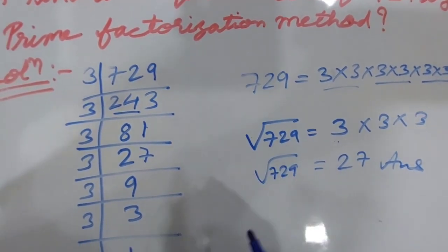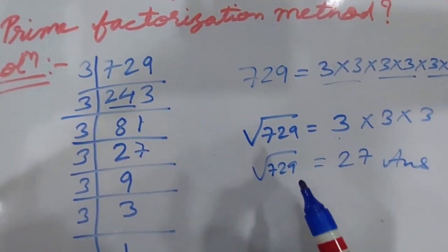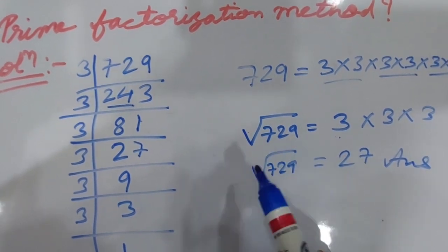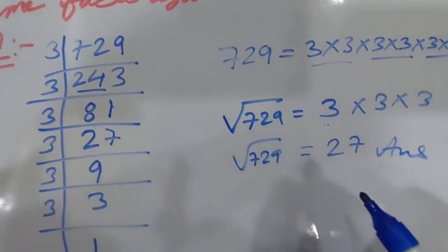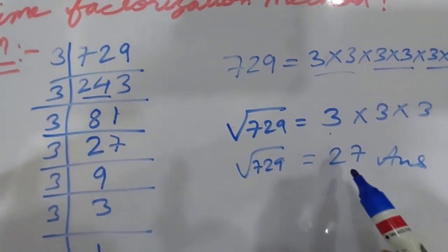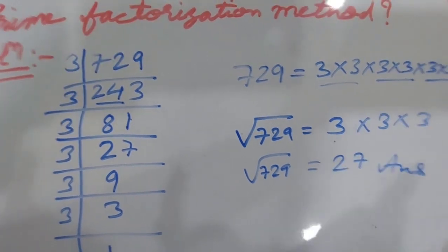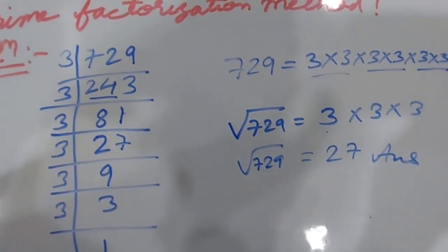When we find the square root of 729 by the prime factorization method, the answer is twenty-seven. Thanks for watching.